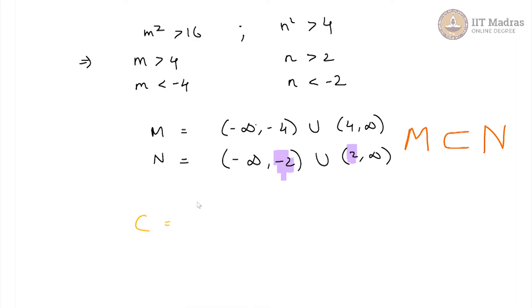However, C is also given out to be a set of integers. So it is not just the intersection of M and N it is the set of integers which belong to the intersection and in this case that intersection is only capital M where therefore we have this set coming up as C.